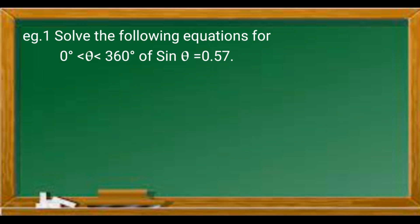Example 1. Solve the following equations for theta between 0 and 360 degrees: sine theta equals 0.57. So first we find the inverse of 0.57 and we get theta equal to 34.75.